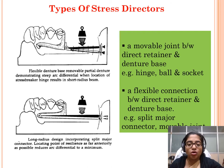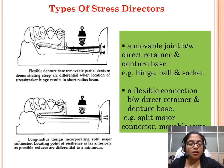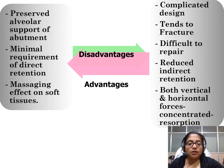There are various types of stress breakers: it can be a movable joint between the direct retainer and denture base, a hinge or ball-and-socket type, or a flexible connection between the direct retainer and the denture base. Both types are shown in the figures. A flexible denture base RPD demonstrates a steep arc differential. Locating the stress breaker hinge to achieve a long radius design, incorporating a split major connector and locating the point of resilience as far anteriorly as possible, reduces the arc differential to a minimum.